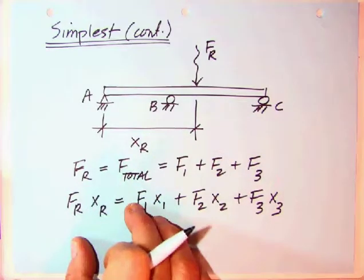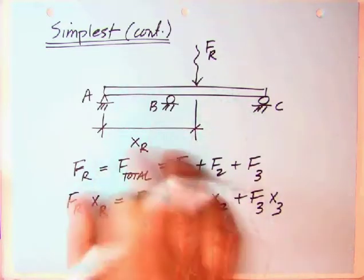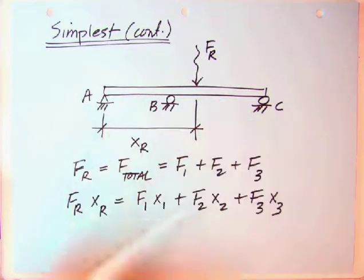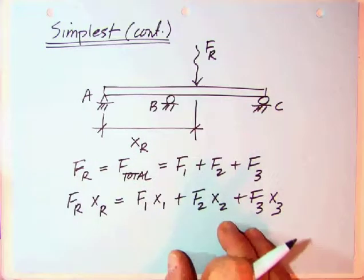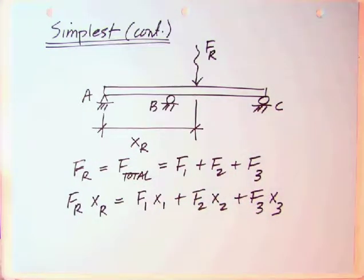And then the F sub R times X sub R, that resultant must be the sum of all the individual forces and their locations from a common point. In this particular case, we're going to pick A. We could pick any point here. They might be asked, well, how far is it from B or C? But of course, once we find it from A, then we can find it from any of the other locations.